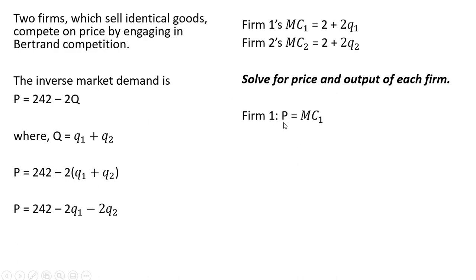So for firm 1, Bertrand competition is price equals marginal cost. We're going to set the price equation equal to firm 1's marginal cost and solve for firm 1's output. Subtracting 2 from both sides, 242 minus 2 gives us 240. Then we're going to add this minus 2Q subscript 1 to both sides, so that's where this 4Q subscript 1 is coming from. Now let's divide everything through by 4. 240 divided by 4 is 60, and minus 2 divided by 4 is minus 0.5. So this is going to be one key equation.